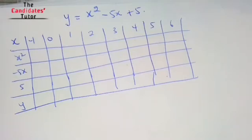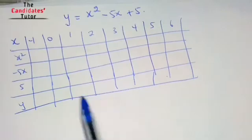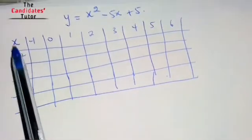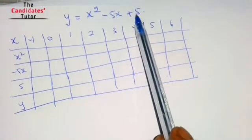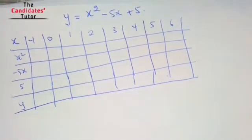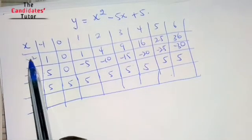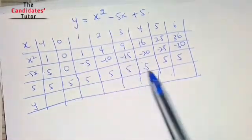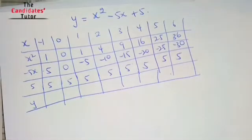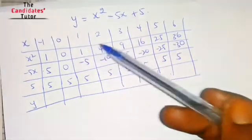The x values given to us range from negative 1 to 6. We are going to arrange columns for x squared, negative 5x, and 5. Now computing: negative 1 squared is 1. You can use a calculator by putting negative 1 in brackets and squaring it to get positive 1. Zero squared is 0, 1 squared is 1, and so on up to 6 squared which is 36.